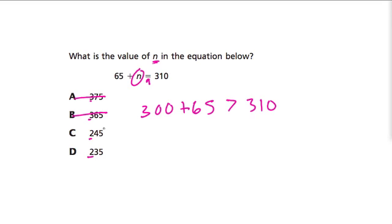So let's try C to see what happens. So 245 plus 65. Well, 5 plus 5 is 10. 6 plus 4 is 10 plus 1. That's 11. And we carried that over. 2 and 1 is 3. That's 310. So the answer is C, 245.